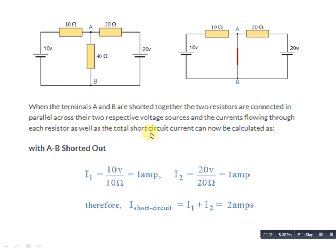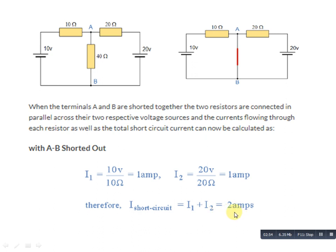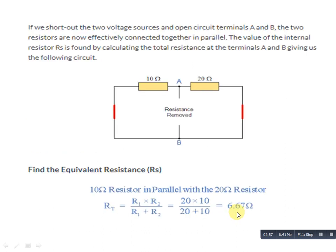We need to find the current between terminals A and B. Current I1 flows in clockwise direction and I2 flows in clockwise direction. Using Ohm's law, I = V/R: mesh one has battery 10V and resistance 10 ohm; mesh two has voltage source 20V and resistance 20 ohm. So we can easily find I1 and I2. Both merge together giving a total Norton current of 2 ampere.